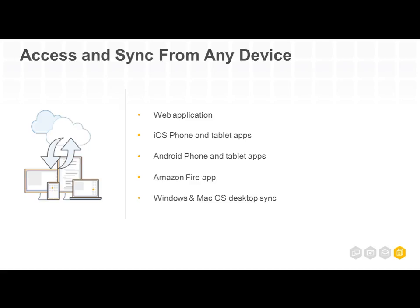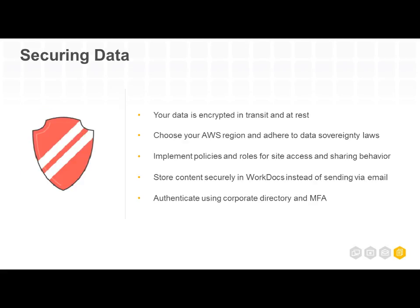WorkDocs offers access and sync from any device — you've got the web application, iOS phone and tablet apps, Android phone and tablet apps, Amazon Fire apps, and Windows and Mac OS desktop sync apps. Your data is encrypted in transit and at rest because encryption is a priority. You can choose the AWS region where you want your data to reside to adhere to sovereignty laws. You can implement policies and roles for site access and sharing behavior — finance can have its own set of file locations, IT can have their own, and an administrator oversees all of it. You can also use multi-factor authentication with a Gemalto device or a soft application on your phone.